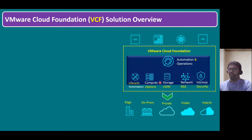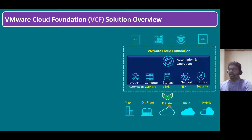As we are aware, this VCF solution — the complete software stack — consists of vSphere, vSAN, NSX network and security, and also LCM lifecycle automation. It also includes the vRealize Suite, which consists of automation and operations — meaning vRealize Operations and other components. When we combine all the software components, it becomes VMware Cloud Foundation. This software stack can run either on edge location or on-premises data center, or we can make it a private cloud as well.